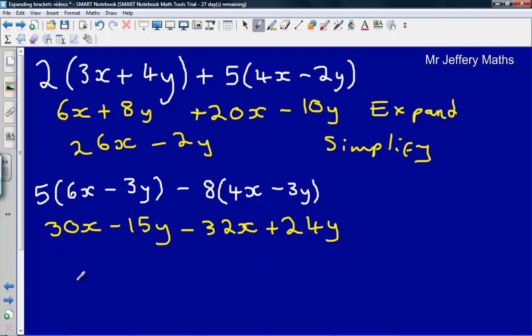now we just need to simplify this. So we've got 30x minus 32x, that leaves us with negative 2x. Then we've got minus 15y plus 24y, that leaves us with plus 9y. And that's that.